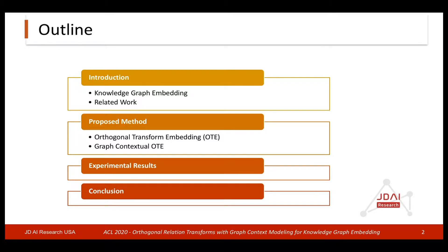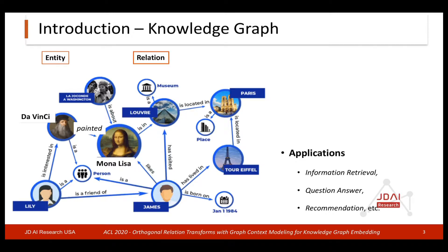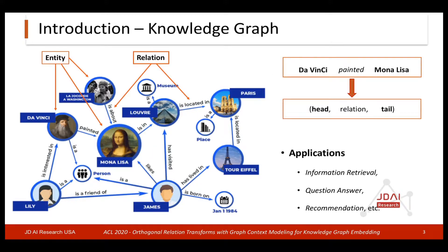Then I'll present our experimental setup and results on common benchmark datasets and conclude the talk with a summary. Knowledge graph is a multi-relational graph with nodes representing entities and edges representing relations between entities. For example, DaVinci painted Mona Lisa — this fact is represented as a head-relation-tail triple. These structured knowledge graphs are helpful for various applications such as search, question answering, and other applications.